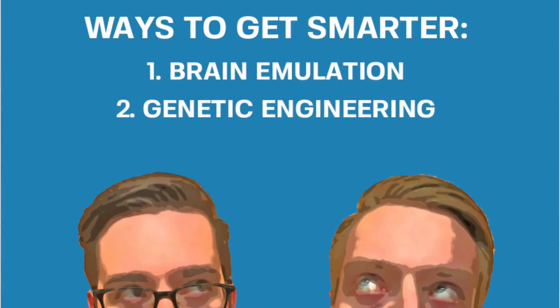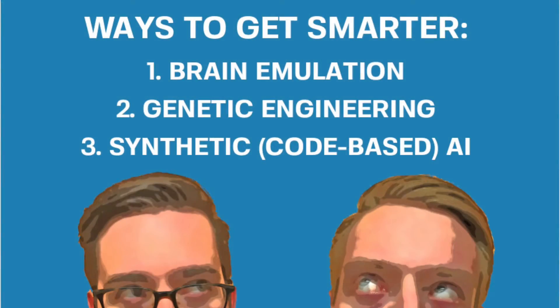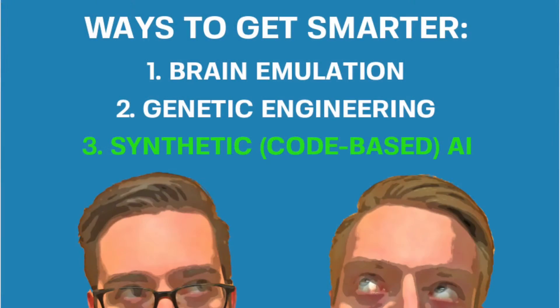The next type is using genetic engineering. We would take existing human embryos and then very rapidly iterate over generations of humanity, in the time span it would take about one generation today. So effectively in this model, we've created a superintelligence out of existing humans. And then finally, he talks about the synthetic or the code-based AI. This is what most people think about when they think about an AI, and this is the superintelligence that Nick Bostrom sees to be the most likely.